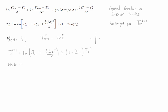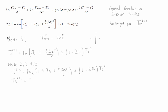For node 2, T2 at P+1 equals the Fourier number times (T1 plus T3), plus Q-dot times Δx² divided by k, plus (1 minus 2 times the Fourier number) times T2 at P. For node 3, T3 at P+1 equals the Fourier number times (T2 plus T4), plus Q-dot times Δx² divided by k, plus (1 minus 2 times the Fourier number) times T3 at P.